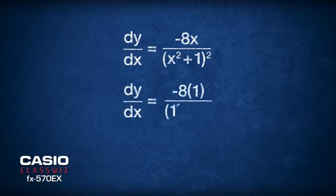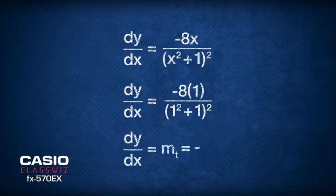All we have to do is substitute the x-coordinate of the point of tangent, which is x = 1, and we get the gradient of the tangent to be -2.